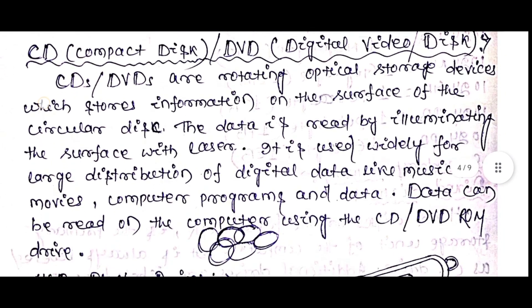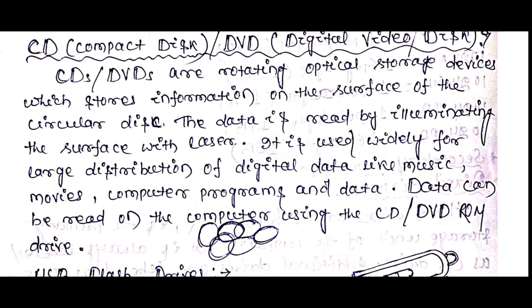CD and DVDs are rotating optical storage devices which store information on the surface of a circular disk. The data is read by illuminating the surface with a laser.